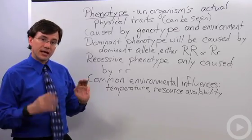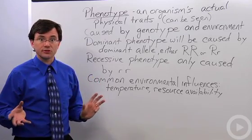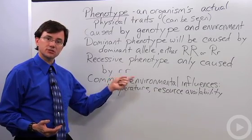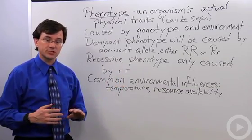The only way you can have the non-rolling phenotype, the inability to roll your tongue like this, for example, you would need to have two of the recessive allele. So you need to be homozygous recessive.